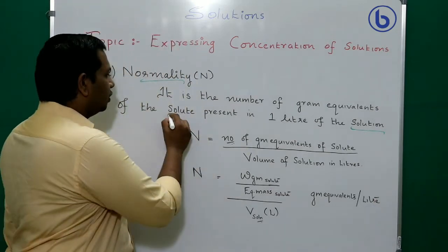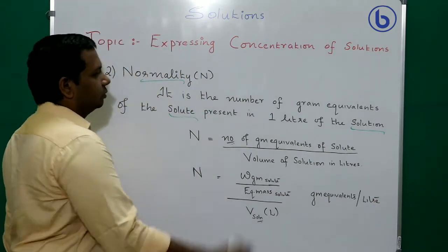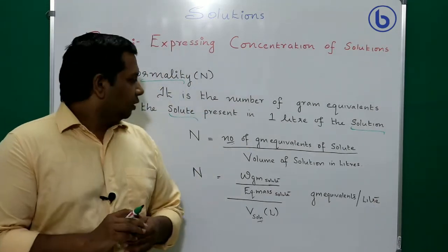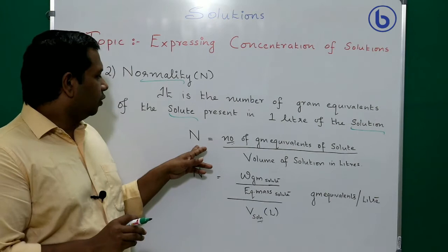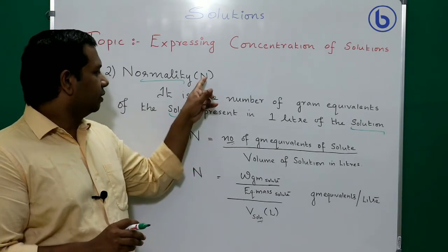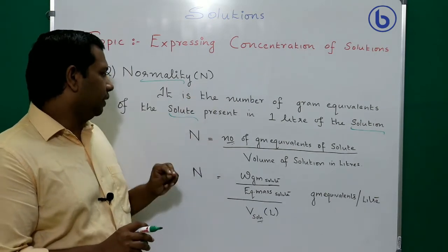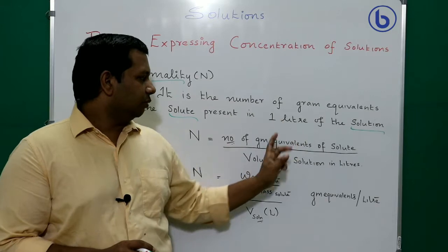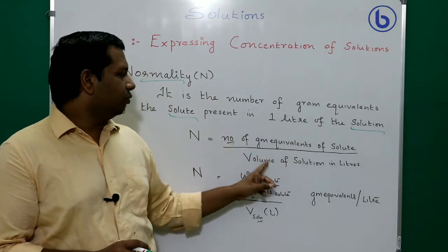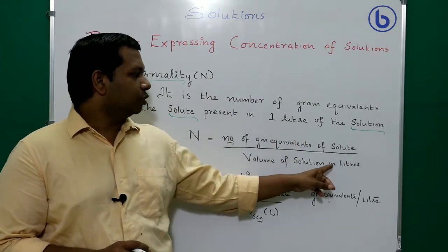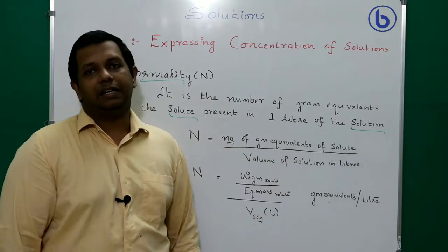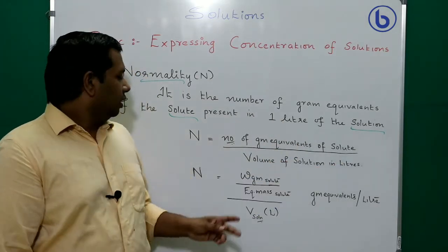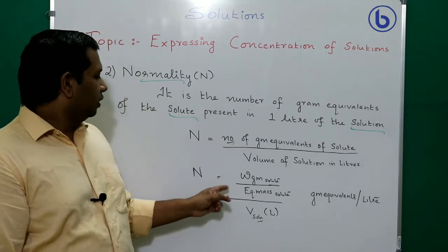Normality is represented by the capital letter N, and the formula is: N = number of gram equivalents of the solute divided by volume of the solution in liters.